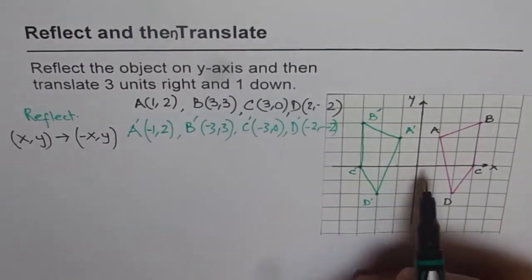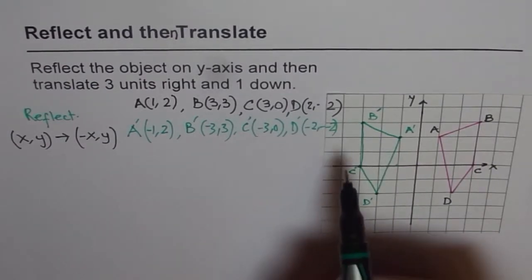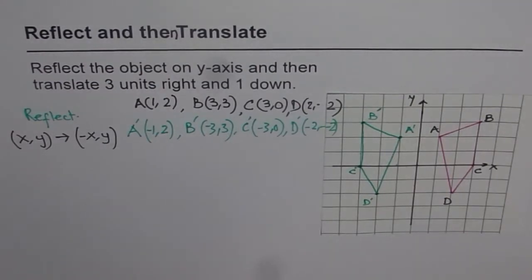C dash is at (-3, 0), and D dash is at (-2, -2). So they are absolutely correct. So that is how you do reflection on y-axis.